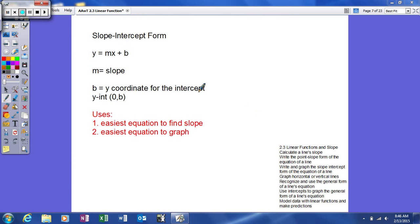Alright, next we're going to be talking about the slope-intercept form. The slope-intercept form is pretty common. This is usually the one that's remembered the most. It's y equals mx plus b.